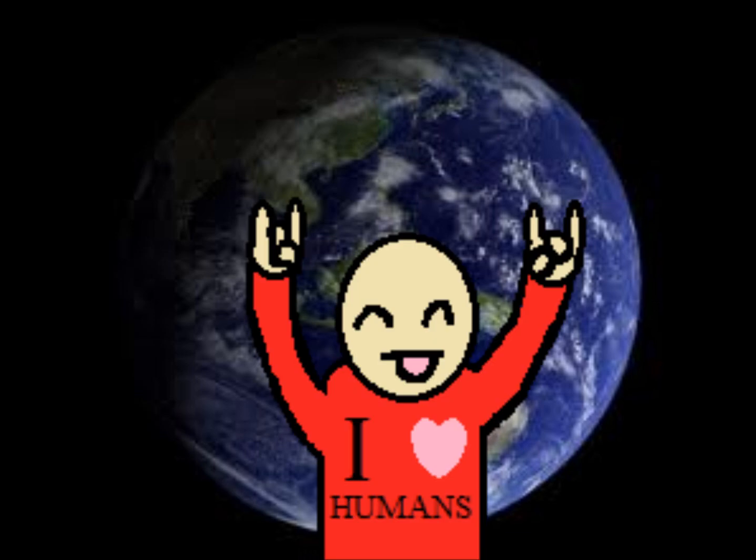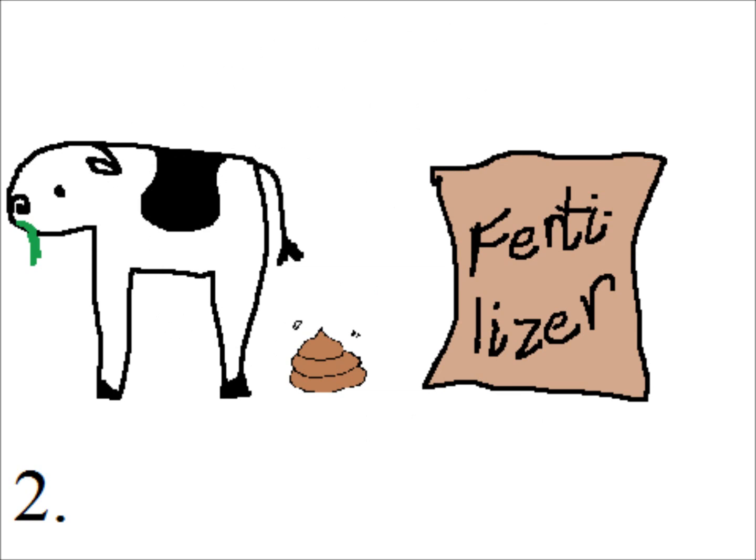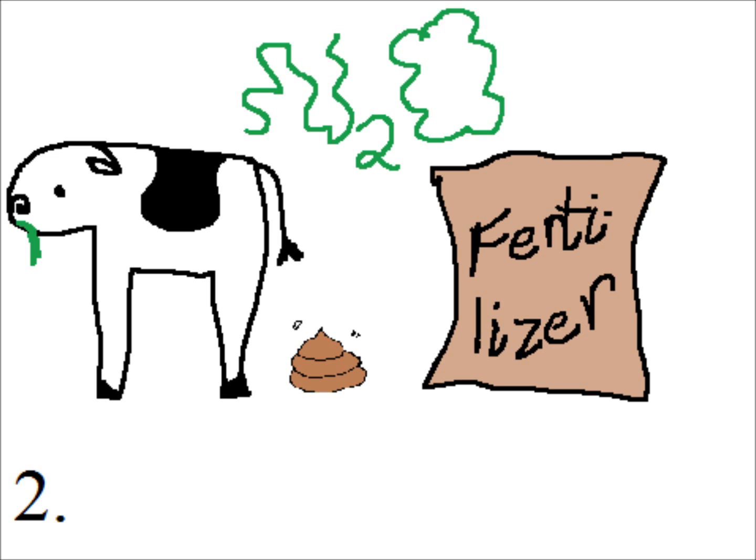We humans are disrupting the nitrogen cycle in five major ways. First, we dump large amounts of nitrogen into the atmosphere when we burn fuel. Second, our demand for good, cheap food adds an overabundance of nitrogen into the soil. As it decomposes, nitrous oxide, a potent greenhouse gas, is pumped into our atmosphere.